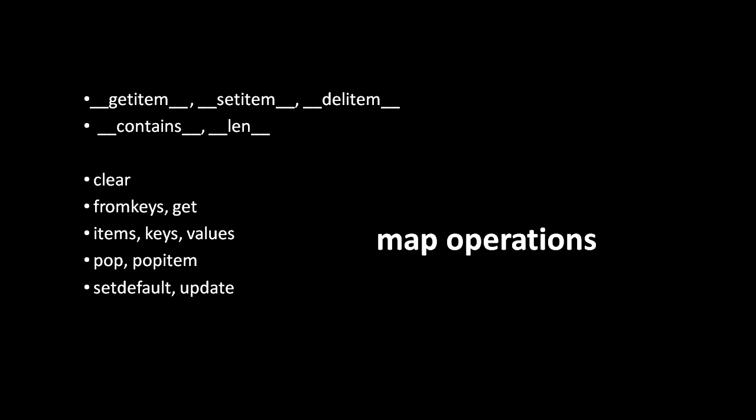The items method will return a sequence of all the items in the dictionary, and it does so in the form of tuples, where the first item in the tuple is the key and the second item is the corresponding value. The keys method will return a sequence of just the keys, and the values method will return a sequence of just the values. The important thing to understand about items, keys, and values is that because maps have no concept of order of their items, the items, keys, and values you get back in these sequences are in no particular order.